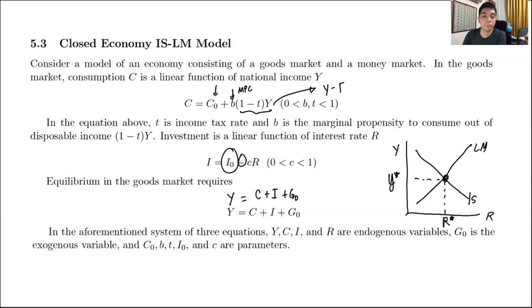In the IS part of this model, Y, C, I, and R are the endogenous variables. G₀ is assumed to be exogenous, and you have a couple of parameters as well.